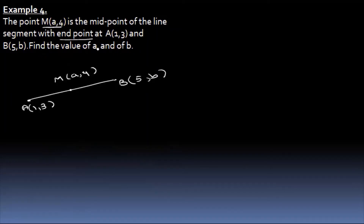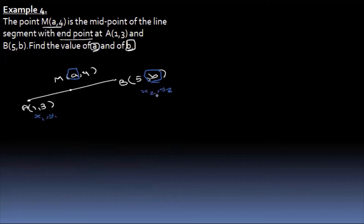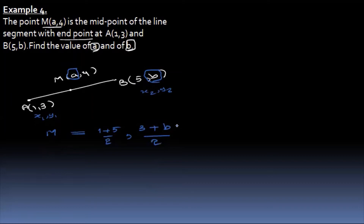Find the values of a and b. The values of a and b — let's see what we have here: x1, y1, x2, y2. The formula gives x1 plus x2 divided by 2, and y1 plus y2 divided by 2. The problem is M goes to B by A: equal to (5 plus 1) divided by 2, and (3 plus b) divided by 2.